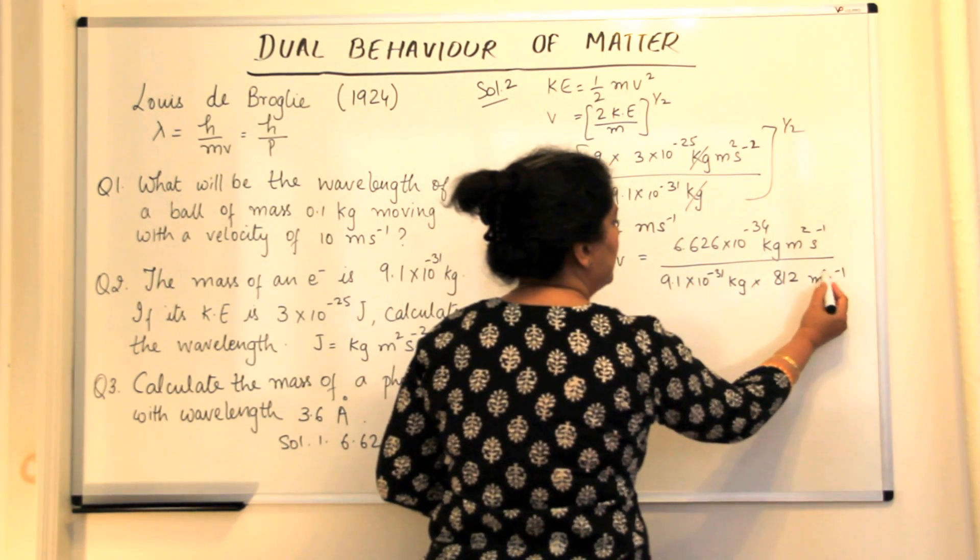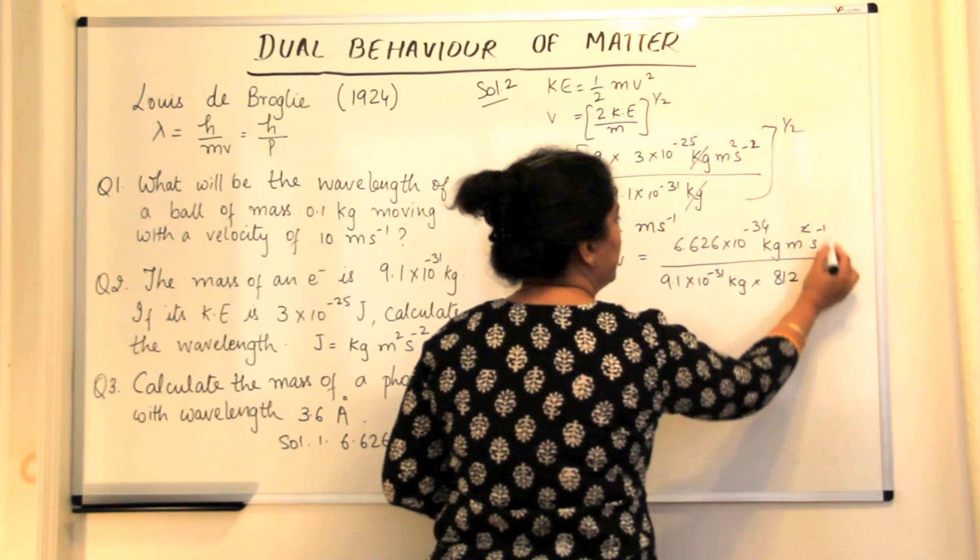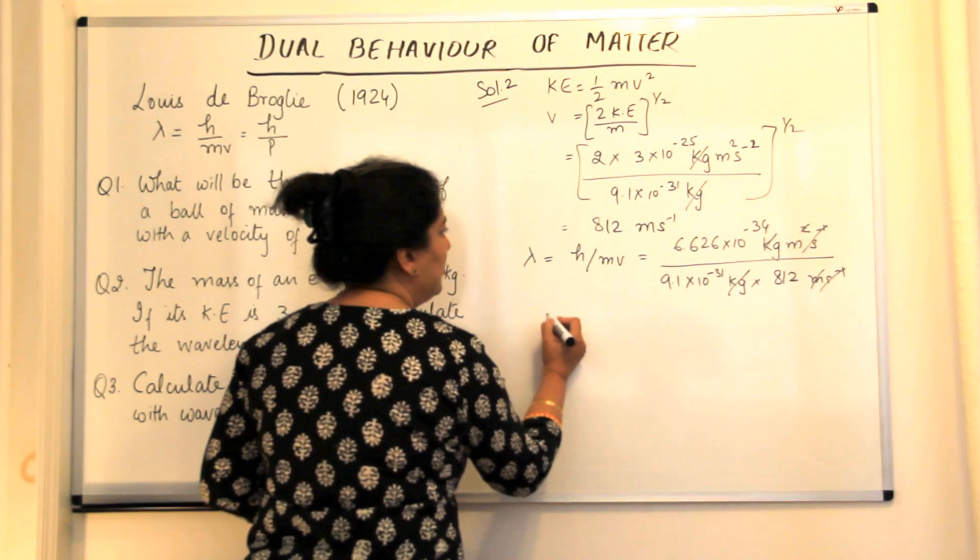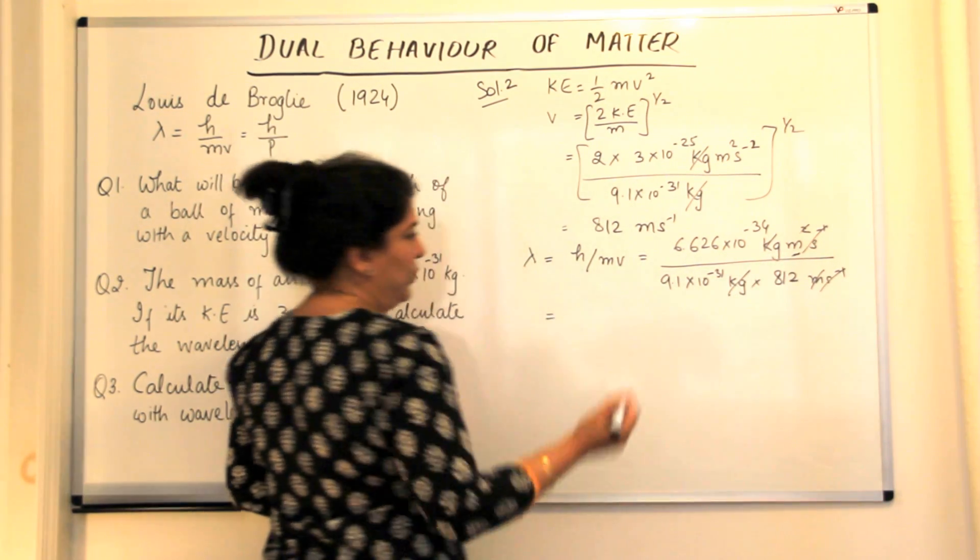So meters and 1 meter is gone here. Per second per second is gone here. And kilograms and kilograms go here. So wavelength would be left in meters, which is right.